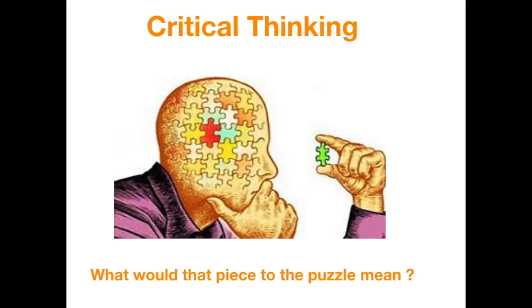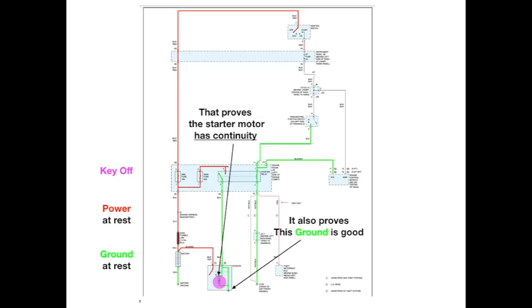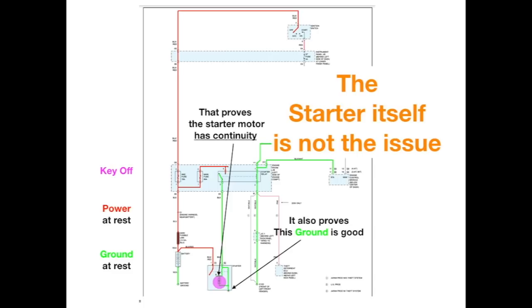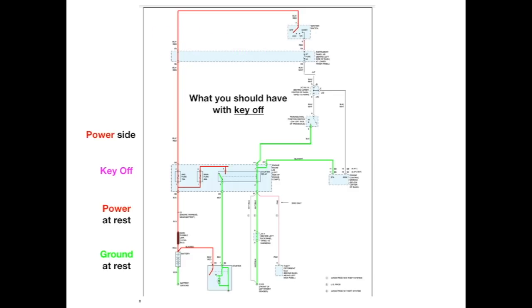Now, what if it would crank in neutral but it wouldn't start? There's some critical thinking needed here — what would that piece of the puzzle mean? All the starter needs to crank is power and ground. Since it cranks, it has all it needs to work. It cranks, so it has continuity — the starter is not open. This proves that the starter has continuity, that the feed ground is good, and that the starter itself is not the issue. When testing, we should always be asking ourselves what we should have with the key off or at rest.